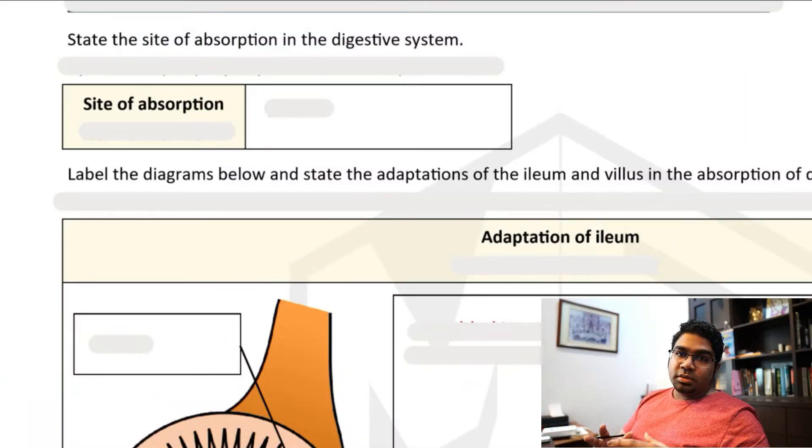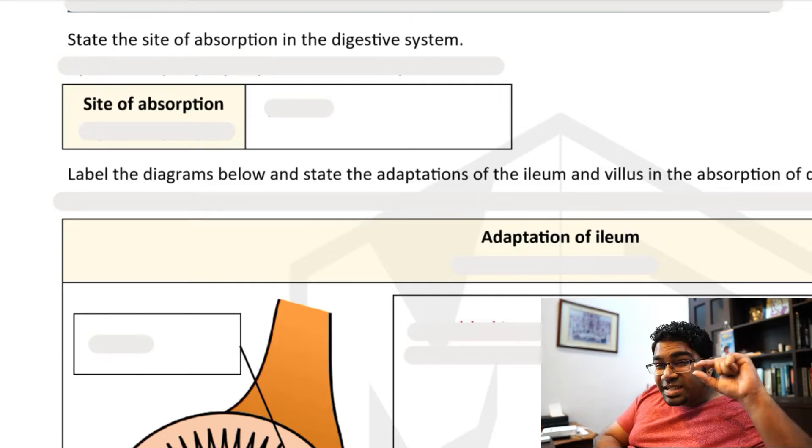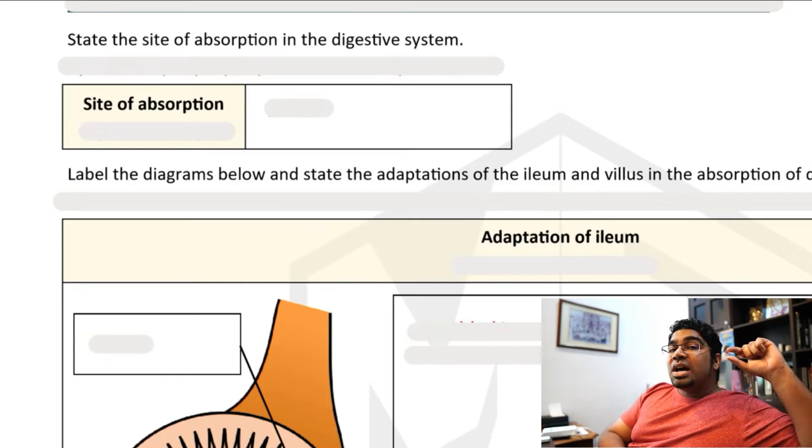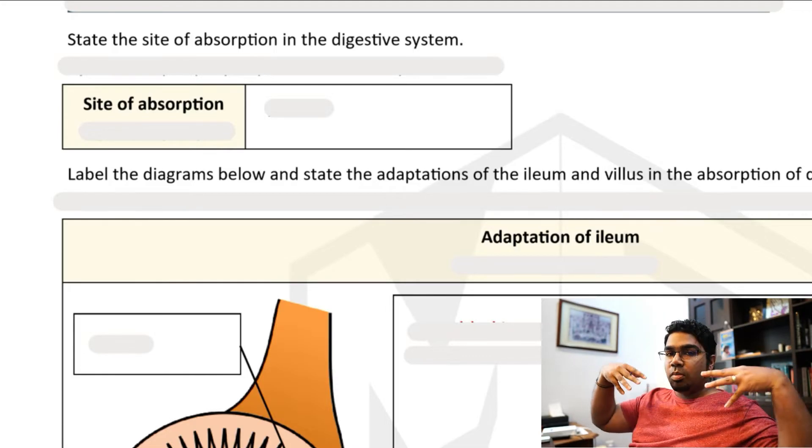Before we go to absorption, first we must understand that digestion has already occurred. The point of digestion is to break down complex molecules into simple molecules that are tiny enough to pass through the plasma membrane to be absorbed into our body.